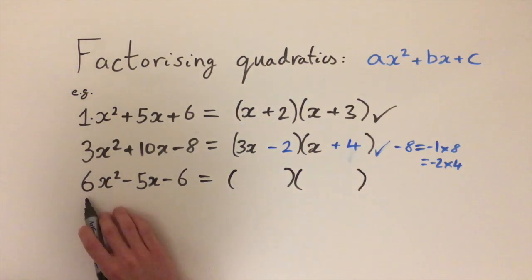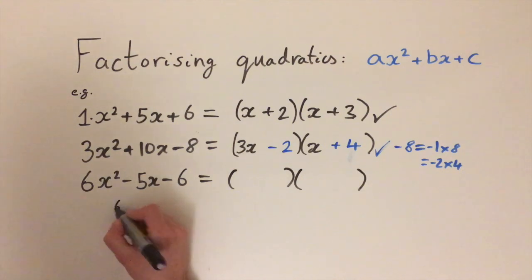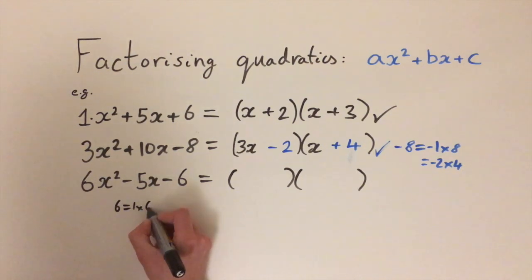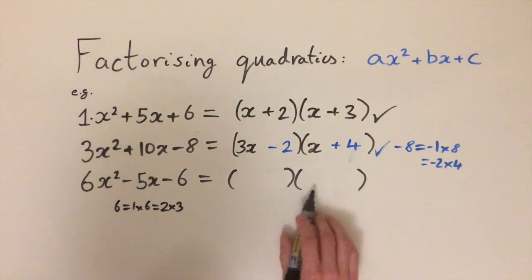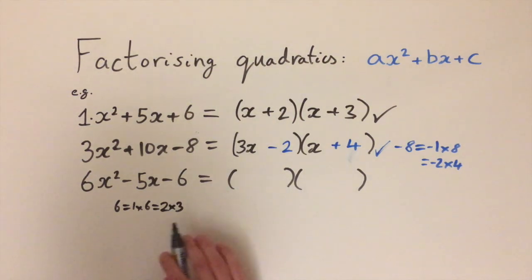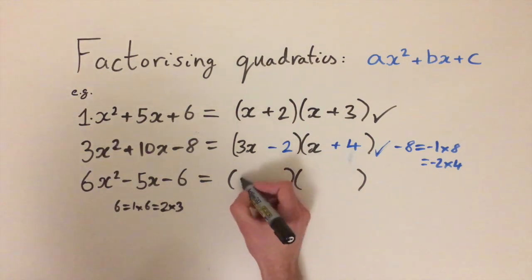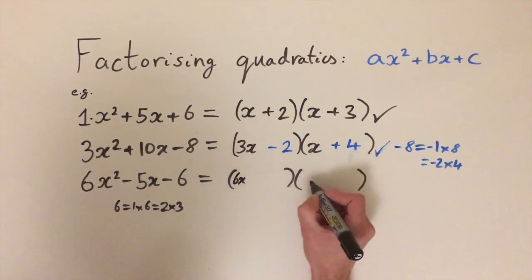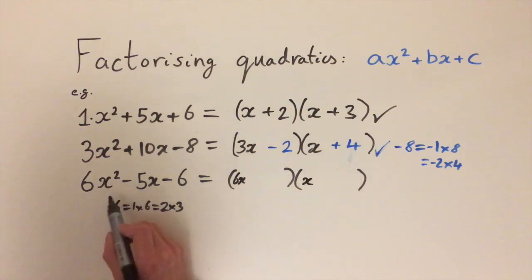So 6 isn't prime which means we can write it in multiple ways. We can write 6 as 1 times 6 or 2 times 3. So now we've got two possible ways of factorizing this. So we just have to do it by trial and error really. So let's plug in 6x and x. That's one way we can write 6x squared.